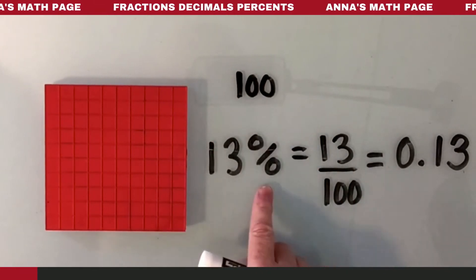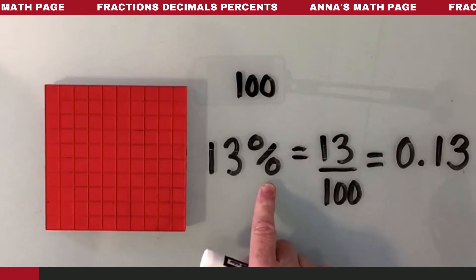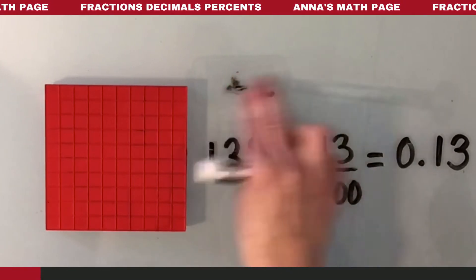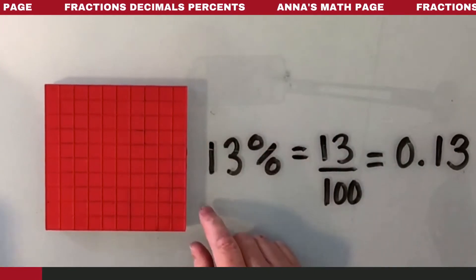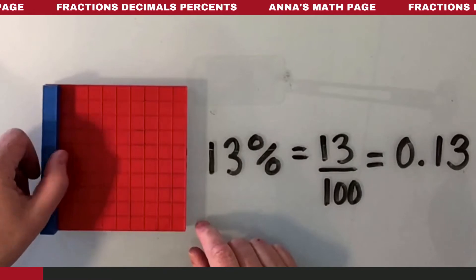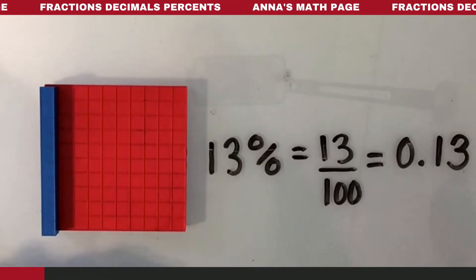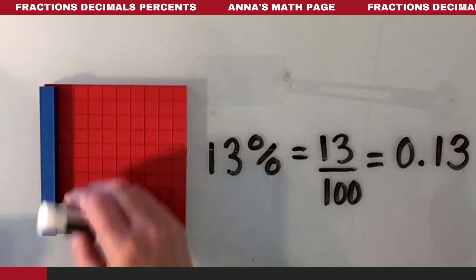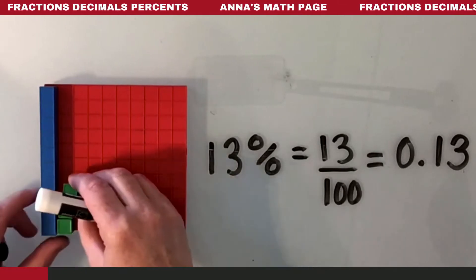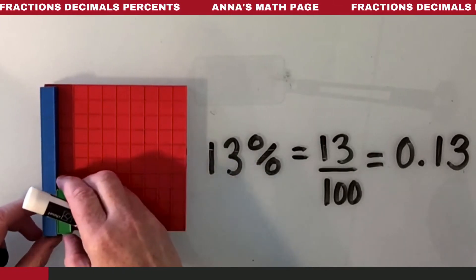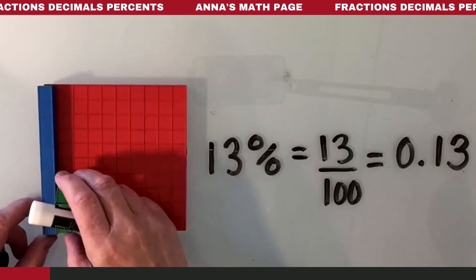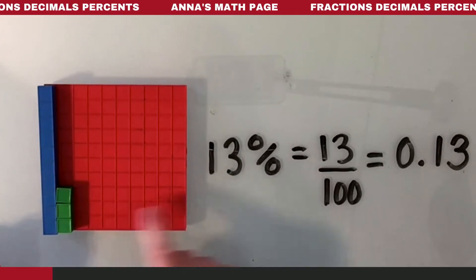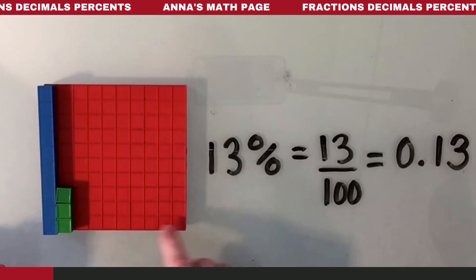So 13 out of 100 pieces. We have 13 out of 100 pieces. So we can put this here as 10 plus 1, 2, 3 more pieces — so 10 plus 3. 10 plus 3 is 13. 13 out of the 100 squares.